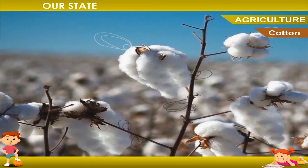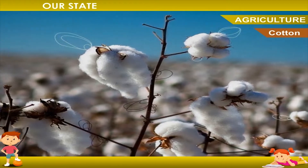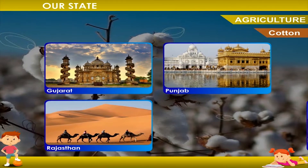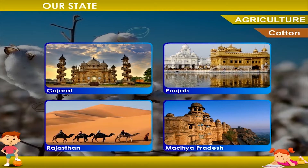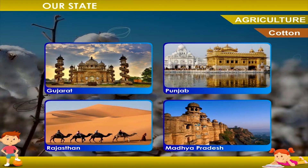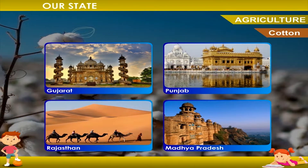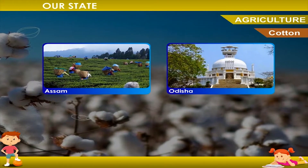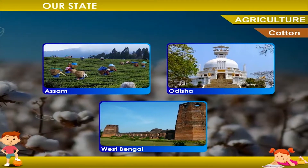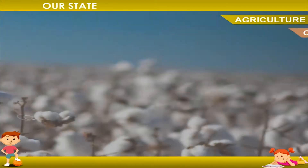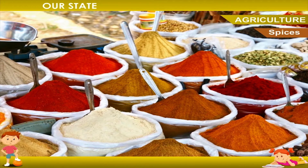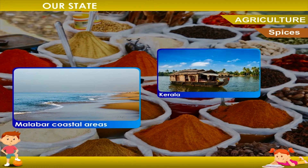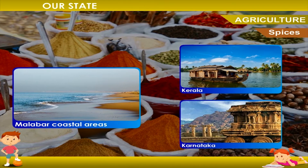Cotton is grown in Gujarat, Punjab, Rajasthan, and Madhya Pradesh. Jute, the golden fiber of India, is produced in Assam, Odisha, and West Bengal. Spices are produced in the Malabar coastal areas in Kerala and Karnataka.